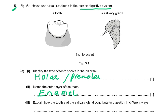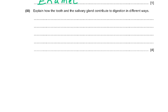The question asks: explain how the tooth and the salivary gland contribute to digestion in different ways. The tooth is involved in physical digestion — it breaks up the food into smaller pieces, or you can say it grinds the food into smaller pieces. Please do not use the word 'chewing' as that alone does not explain the process clearly.